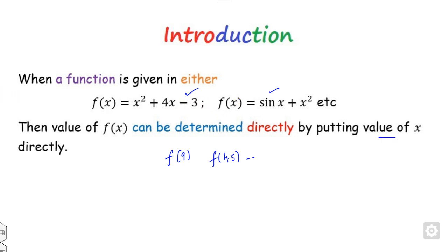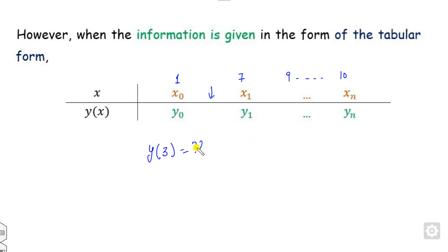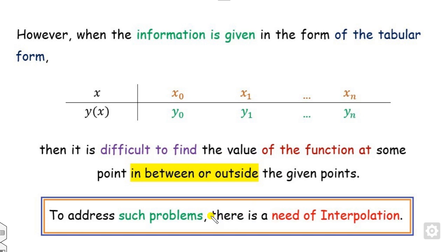But on the other hand, if some information is given in tabular form — x₀, x₁, and so on — then how can you find values that lie in between? For example, if x values are 1, 7, 9, 10, how do you find y at x = 3? Since it is not represented as a function, it is difficult to find values between or outside the given points. So there is a need for interpolation to solve this problem.